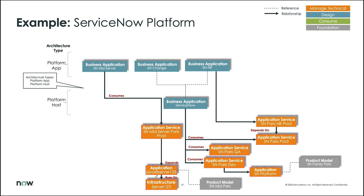As we continue to flesh this out, we indicate that there are product models associated to the applications sitting on the hardware. In this case we don't have hardware, but we have a platform application associated to the product models. The product models capture things like the GA date, end of life, and end of support date, which is typically published by various vendors in the market.